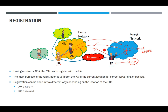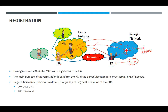Now let us understand what registration means. Whenever you get a COA or a co-located address, you need to tell your home agent that you are not in your home network — you are in a foreign network and your new address is this. Whenever you get any packet for me, kindly send it to this address. That process is called registration.